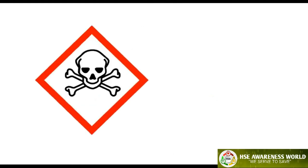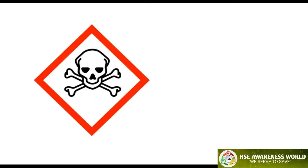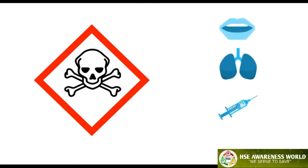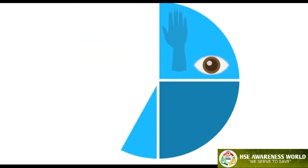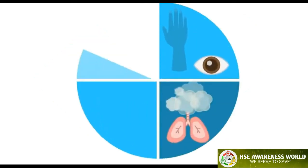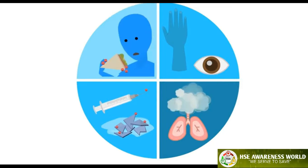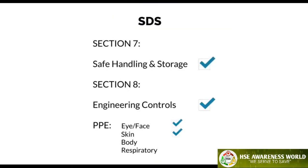The familiar skull and crossbones signifies serious illness or death if swallowed, inhaled, injected, or absorbed by soft tissue. The critical vulnerabilities are soft tissues, inhalation, injection, and ingestion. Other considerations are listed in Sections 7 and 8 of the SDS.